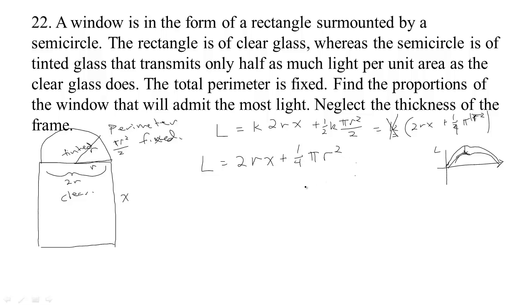The problem now is that the amount of light we get depends on two things, x and r. So we need to find a relationship that will allow us to eliminate one of the variables from this equation. And the relationship we can use, the thing we haven't looked at yet, is the fact that the perimeter is fixed.